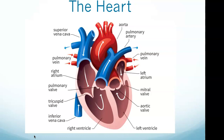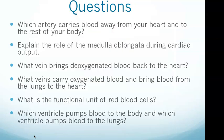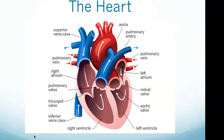The right and left atria are more in the middle. On the left side of the diagram you see the right atrium, and on the right side you see the left atrium. The left ventricle pumps blood to the body and the right ventricle pumps blood to the lungs — that answers question six.